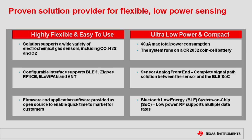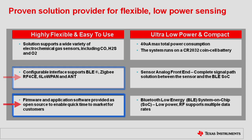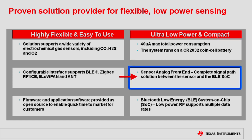We have a proven solution that's flexible and low power. We're talking about a solution that supports a wide variety of electrochemical gas sensors — it doesn't matter where it's manufactured, if it's an electrochemical cell, our solution should handle it. It's very modular, it can handle up to 30 plus gases, and it has a configurable interface supporting various protocols. The firmware and application software are provided as open source, giving you the ability to hit the market as soon as possible. We are ultra low power at 40 microamps max total power consumption — the system runs off a coin cell. The sensor analog front-end is a complete solution, and the BLE is low power and supports multiple data rates.